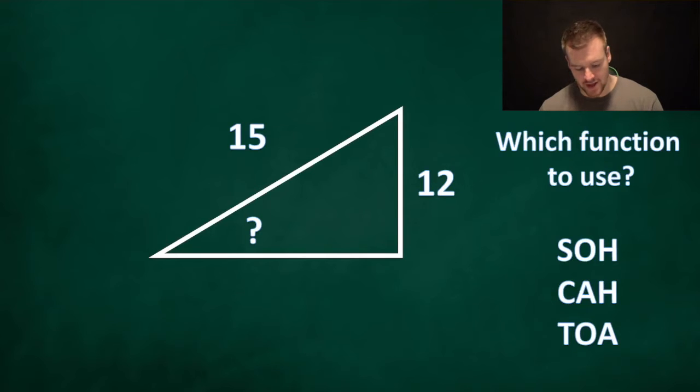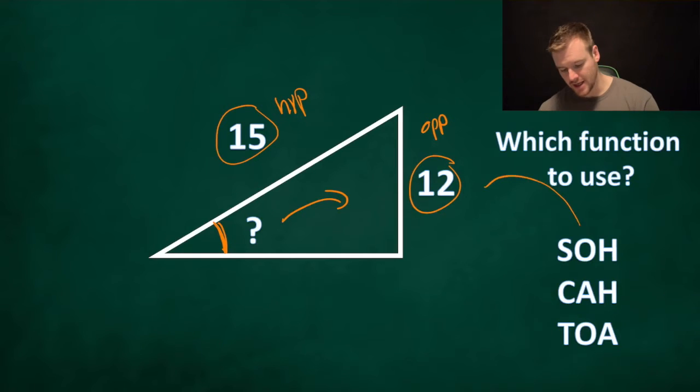So if it's looking at this angle and we want to figure what that angle is, we have information about the hypotenuse over here and about the opposite over here. So we have O and H. That's going to take us to SOH and we're going to have to use sine to find that angle. Remember we can use these trig ratios to find angles or to find sides. So that one we would use sine.